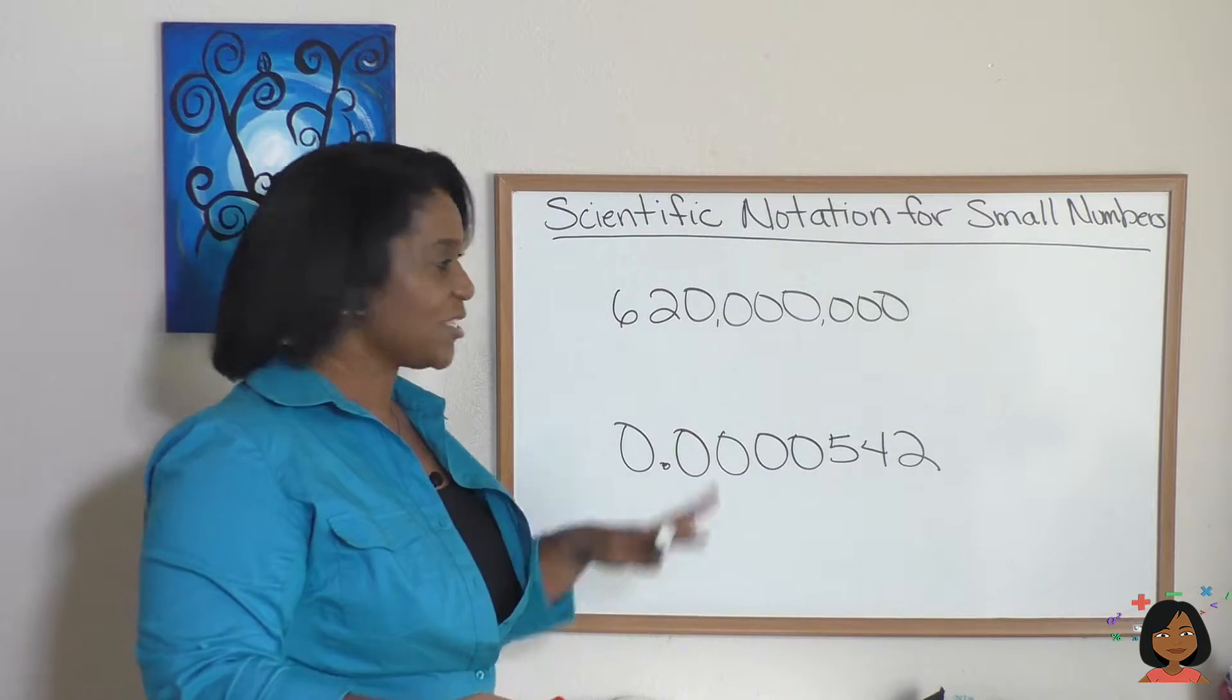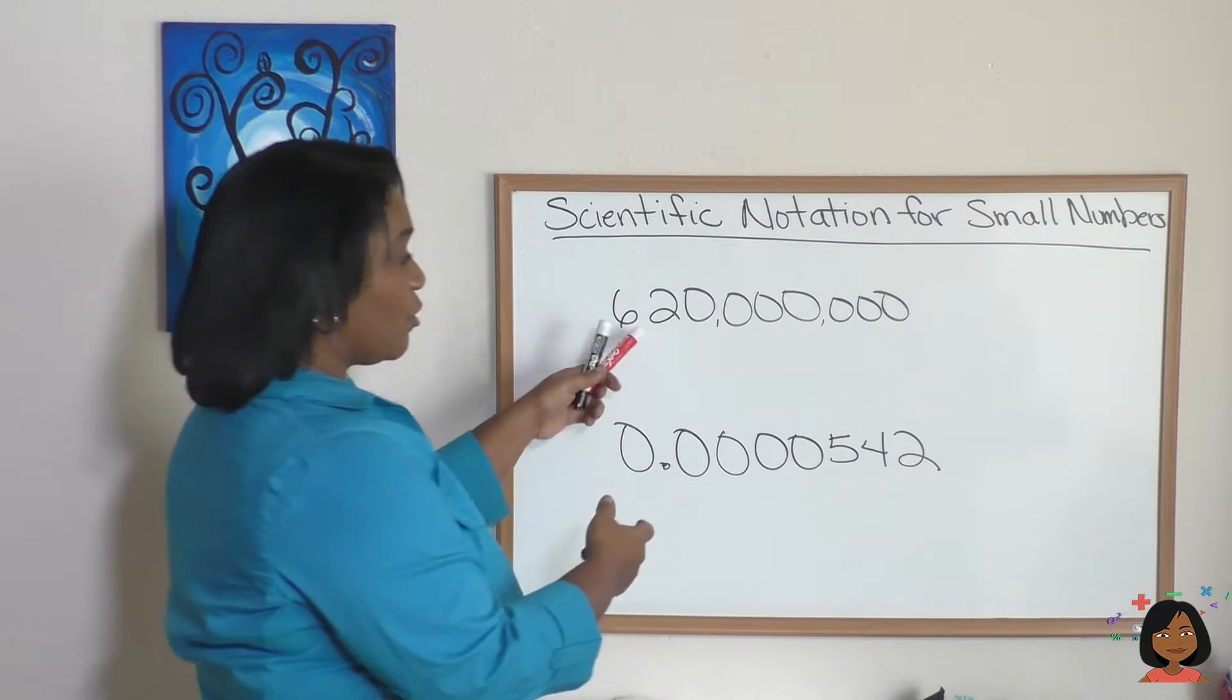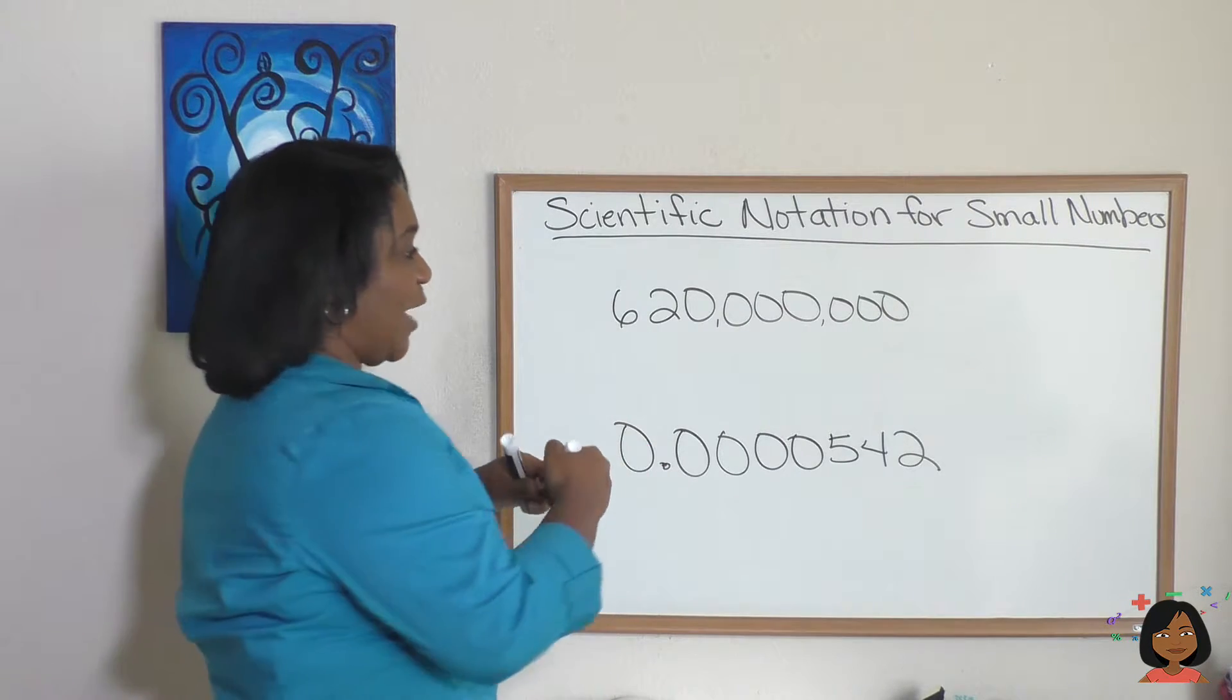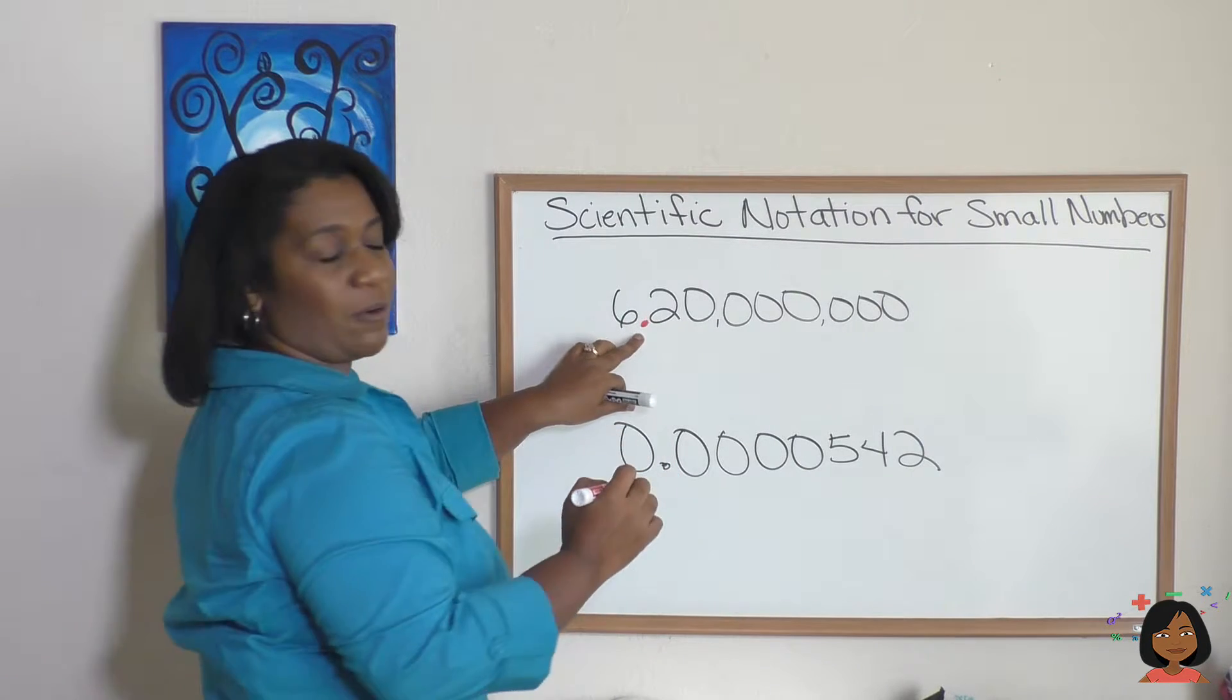And how we did it is we turned our number into a decimal. We said, I want to have a whole number and then I want a decimal right after that whole number.